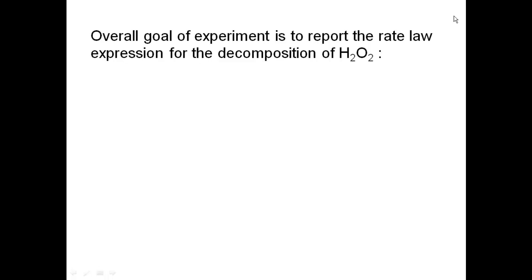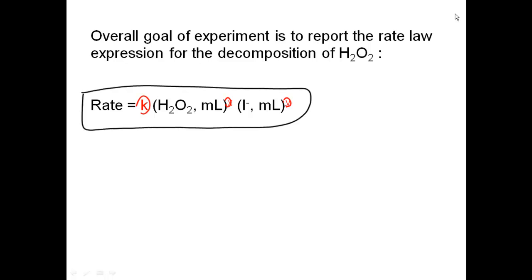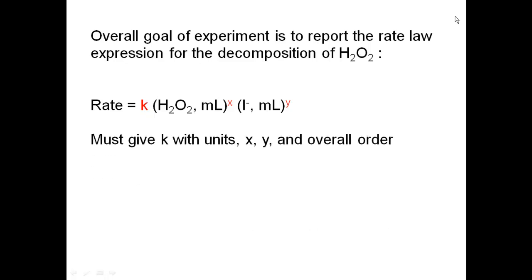The overall goal of this experiment is to report the rate law expression for the decomposition of hydrogen peroxide: rate = k · (volume of H₂O₂ in mL)^x · (volume of I⁻ in mL)^y. You must report k with its units, x, y, and the overall order (x + y). Make sure you include the units of k — the equation involves milliliters, not molarity.